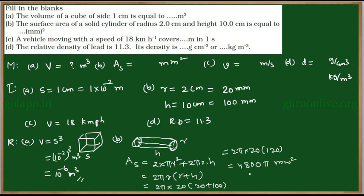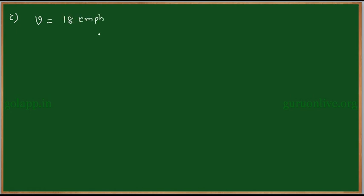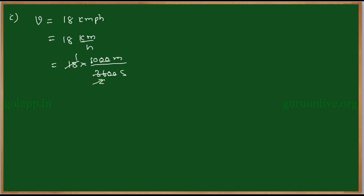For part C, the speed of the vehicle is 18 kilometer per hour. To convert to meter per second: 18 km/h = 18 × (1000 m / 3600 s) = 5 meter per second. The shortcut is: for any value in kilometer per hour, multiply by 5/18 to convert to meter per second.